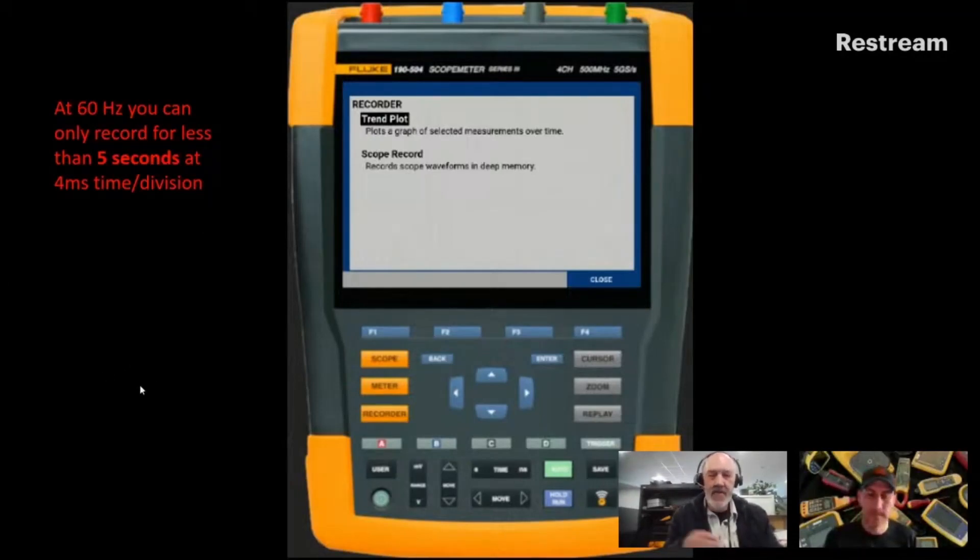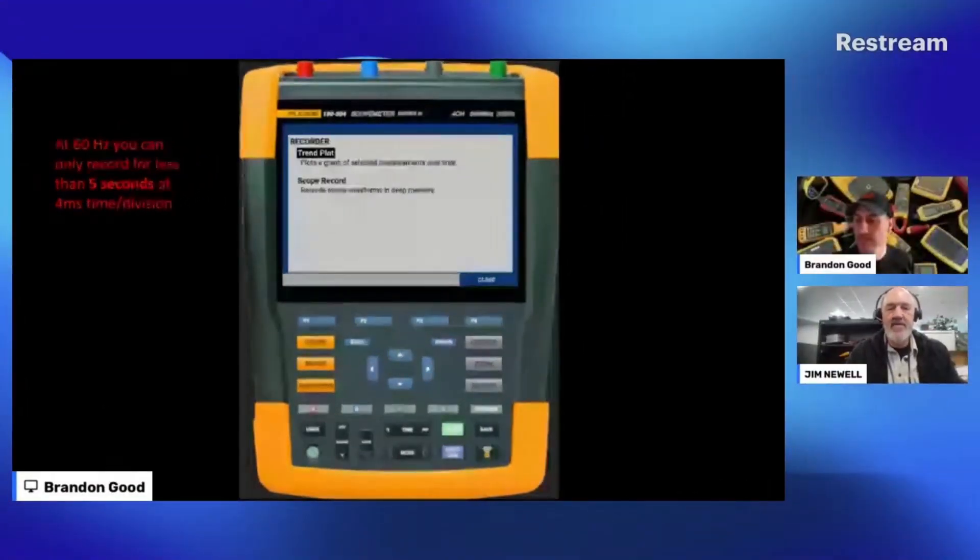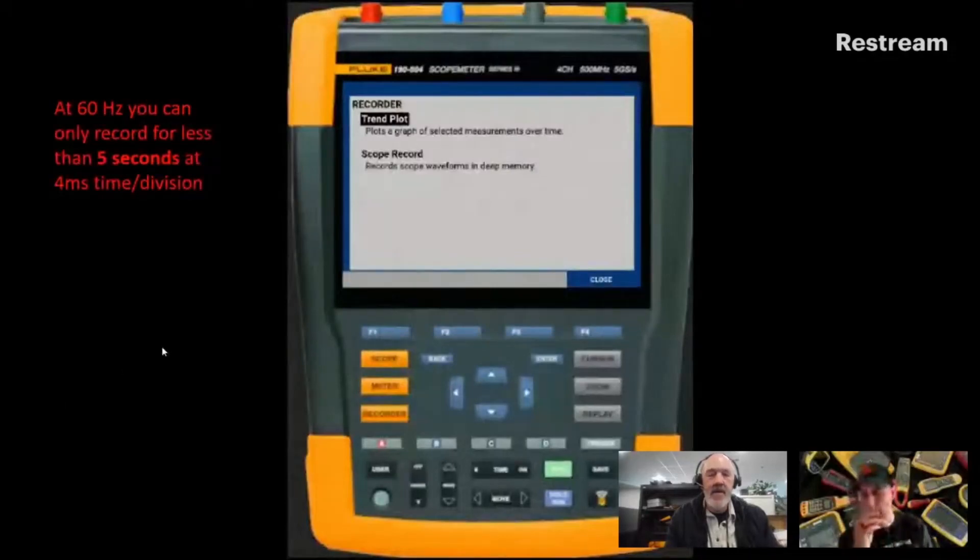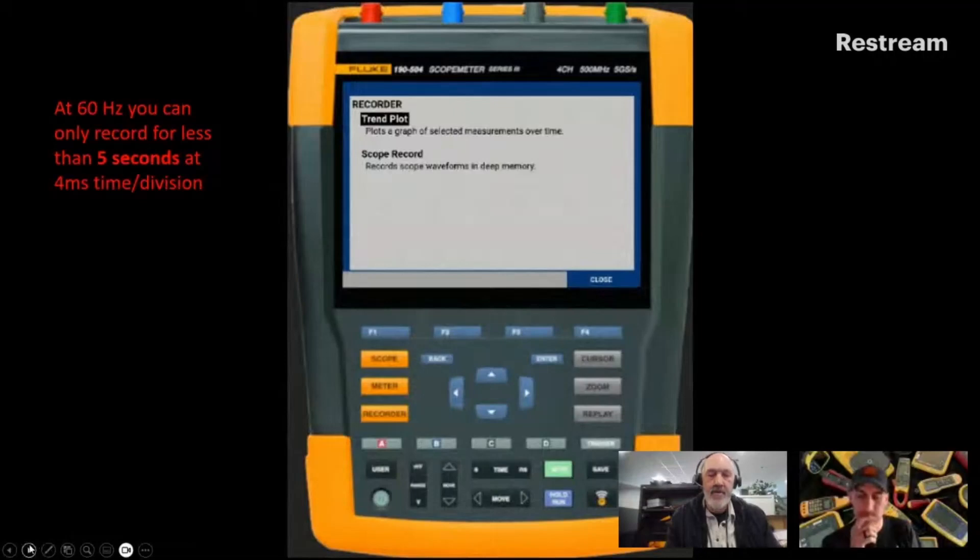Sure. Just to add to what you said about the red verbiage on the left, not only does it do four milliseconds per division for 60 hertz, it's four milliseconds per division for anything. Talking with customers, this is a common call that we get at tech support with the scope meters. Somebody wants to be able to have the scope monitor for an extended period of time, more than five seconds. Now the scope record mode can record for longer, but the time base gets compromised. You have to go from four milliseconds to 10, 20, 100 milliseconds. So the scope slows down to be able to extend your length of recording, but it's not going to be able to capture the waveform that you're interested in capturing potentially.